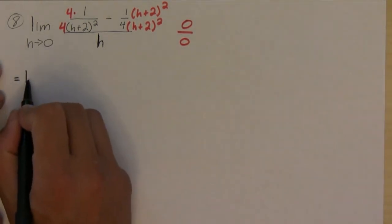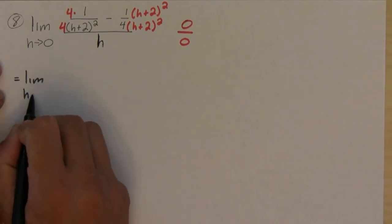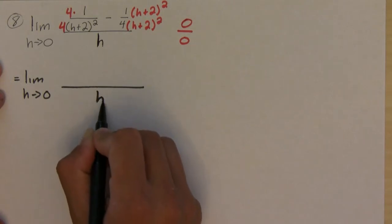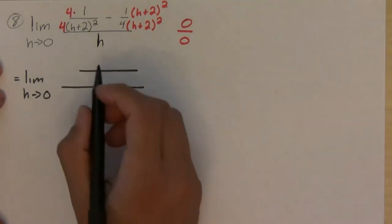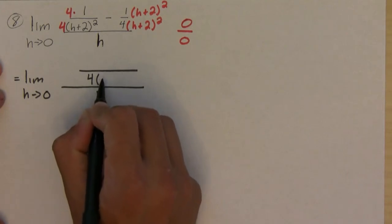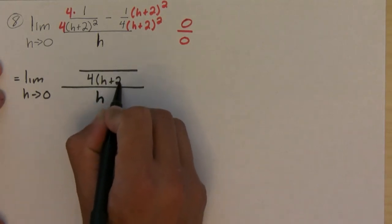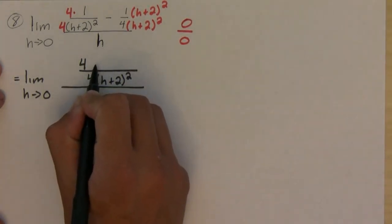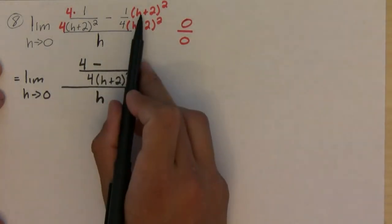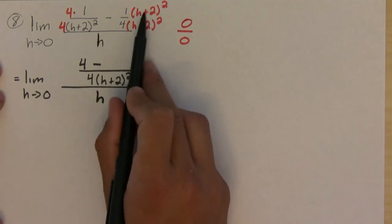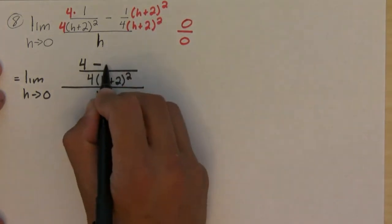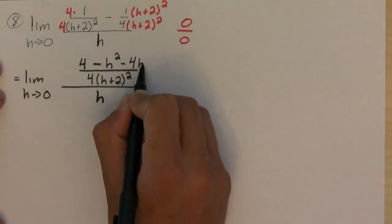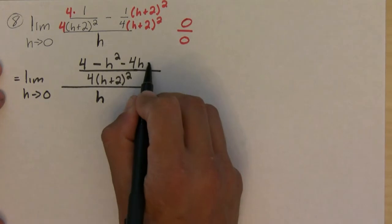Okay, so what we get is the limit as h approaches 0. I'll just put the h on the bottom now. I'm going to have one fraction and the denominator is going to be 4 times h plus 2 squared. And on top I would get 4 minus, now if I FOIL out the h plus 2 squared, I would get 4 minus h squared minus 4h minus 4.